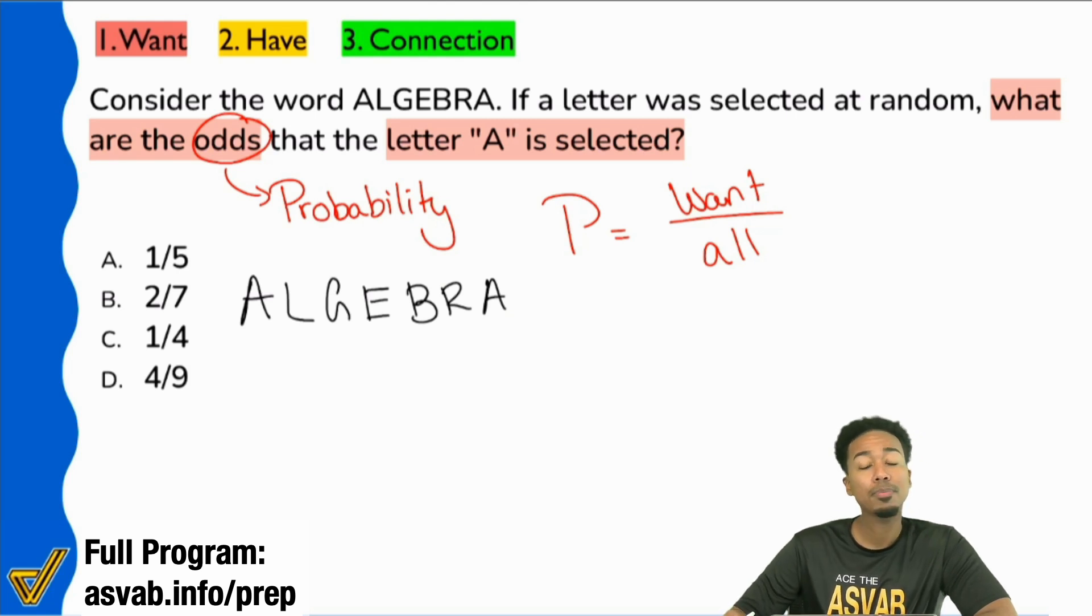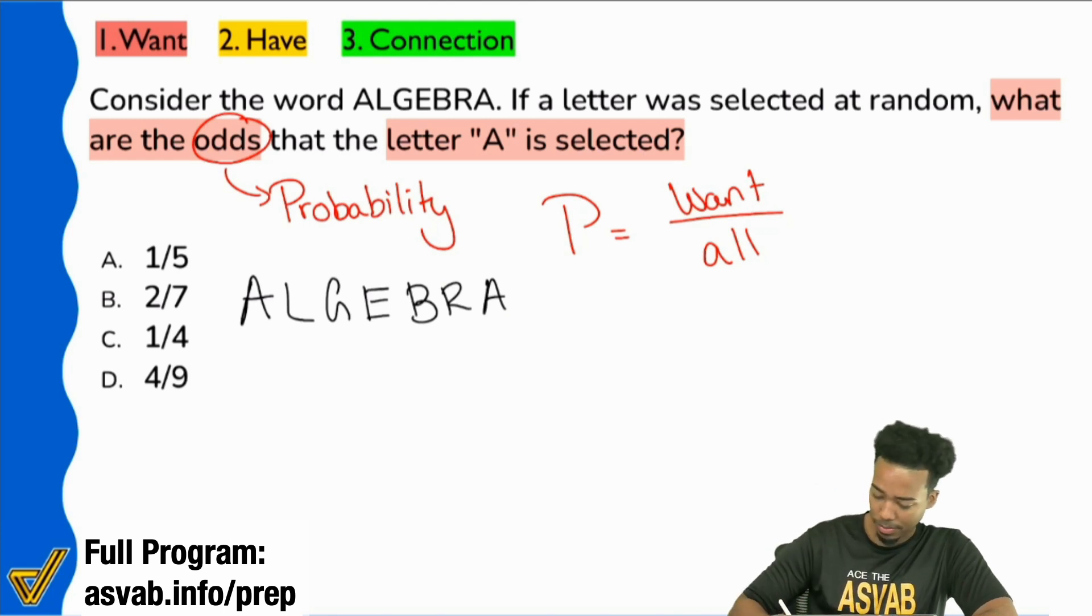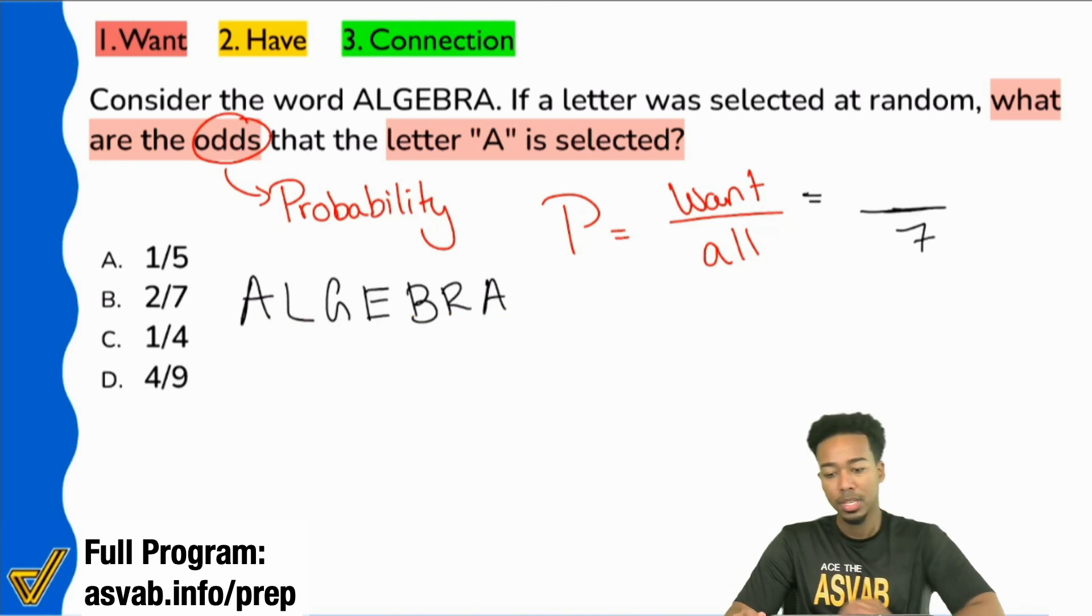So everybody, how many letters do we have in all here? We've got seven. Count them out: one, two, three, four, five, six, and seven. So we have seven total letters.